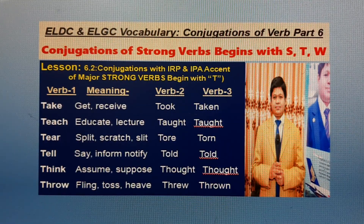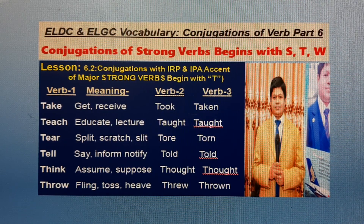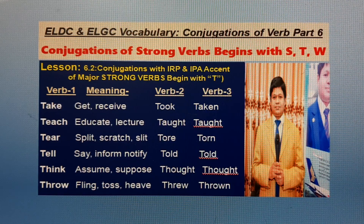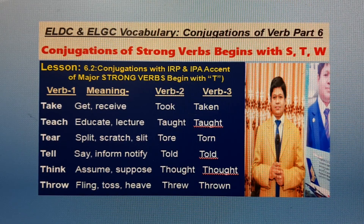Lesson 6.2: Conjugations with IRP and IPA accent of major strong verbs beginning with T. Verb B1: Take. English meaning: Get, receive, acquire, lower. B2: Took. B3: Taken. Verb B1: Teach. English meaning: Educate, lecture. Bangla meaning: Shikadia. B2: Taught. B3: Taught.